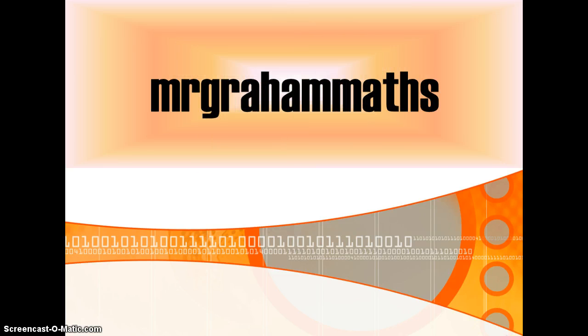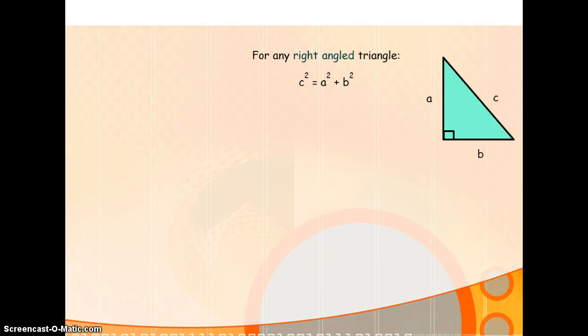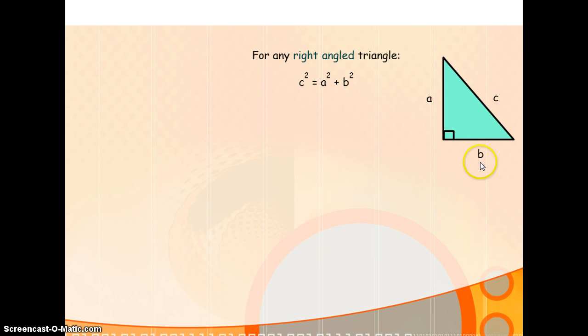Not every Pythagoras question will be looking for the hypotenuse. You will come across questions which ask you to find the shorter side. This doesn't mean you're looking for the shortest side, just a side that is not the hypotenuse. So you have to be able to identify which side is the hypotenuse and which side is a shorter side. Across from the right angle is the hypotenuse, so either of the other two sides can be considered to be a shorter side.